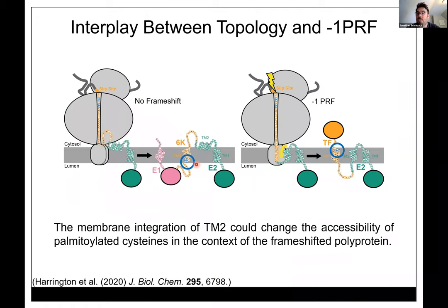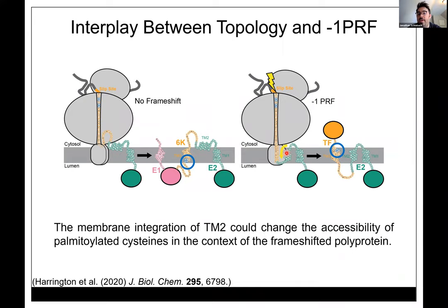At the canonical slippery sequence, the tRNA anticodons and codons can shift out of frame while still maintaining base pairing. Normally you keep producing the zero-frame protein, but occasionally you shift back by one and produce this alternative polypeptide. We think this corresponds to topology: most of the time when TM2 comes out of the ribosome, it skips onto the membrane interface and produces the full-length polyprotein — but sometimes TM2 slides into the translocon in a probabilistic way that coincides with ribosomal frameshifting.